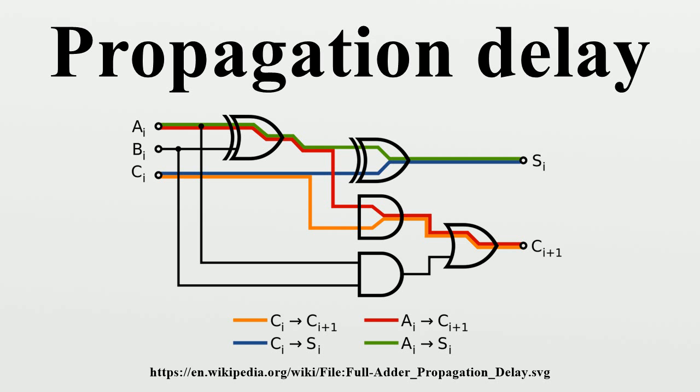In computer networks, propagation delay is the amount of time it takes for the head of the signal to travel from the sender to the receiver. It can be computed as the ratio between the link length and the propagation speed over the specific medium.